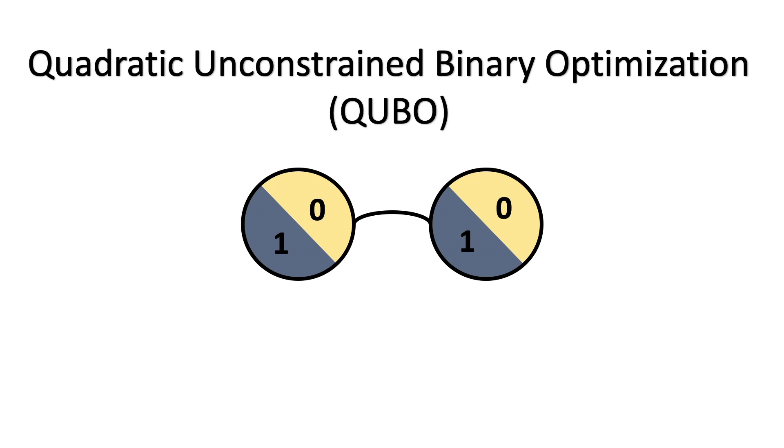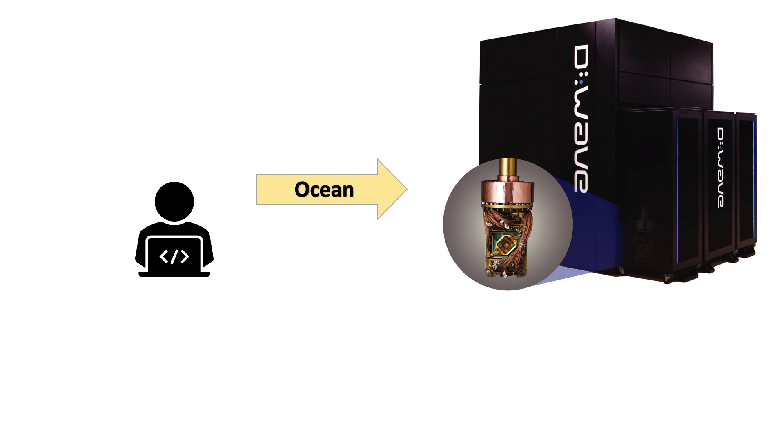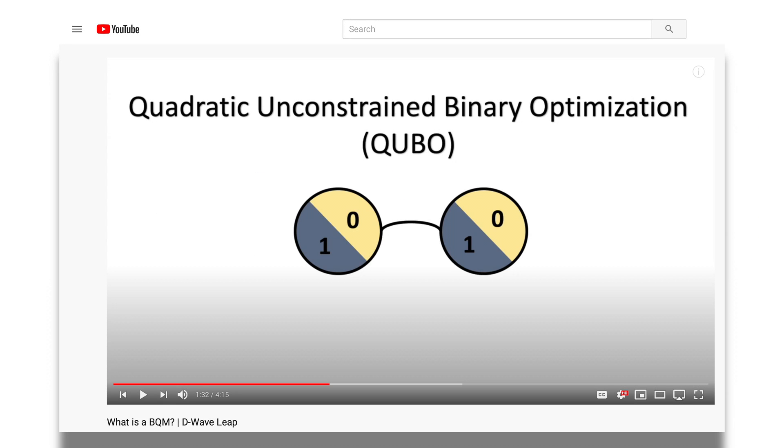This model represents a problem using variables that can take the value 0 and 1. In this video, we'll walk you through what happens when you send a QUBO problem from your computer over to the D-Wave quantum processing unit using our Ocean software development kit. If you're new to the world of binary quadratic models, you might want to check out our video that will introduce you to these different models.